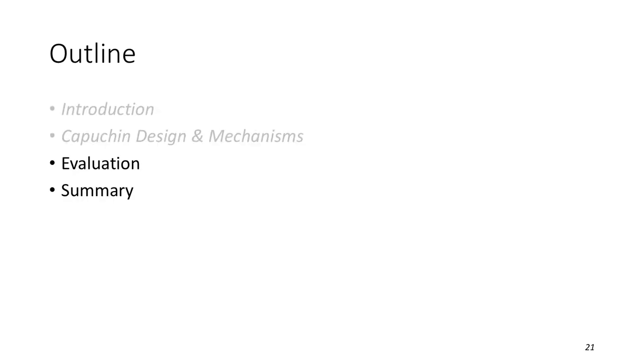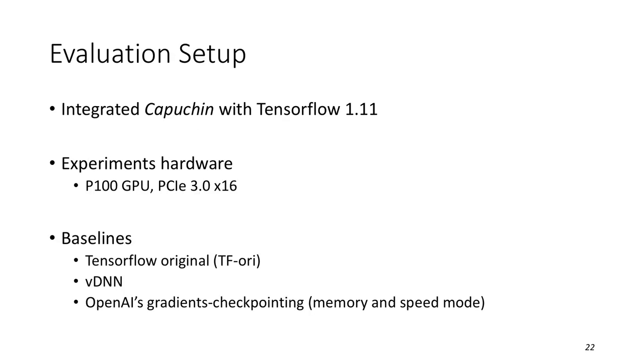We talk about the evaluation in the next. We implement Capuchin over TensorFlow version 1.11. The experience runs on P100 GPU under PCIe Generation 3 with 16 channels. And there are three baselines. The first is the original TensorFlow, the second is VDNN. The third is OpenAI's Gradient Checkpoint. It includes two modes, speed mode and memory mode, where speed mode avoids recomputing expensive operations.